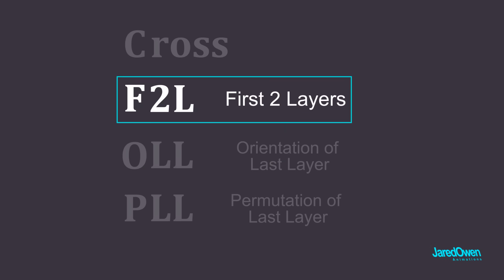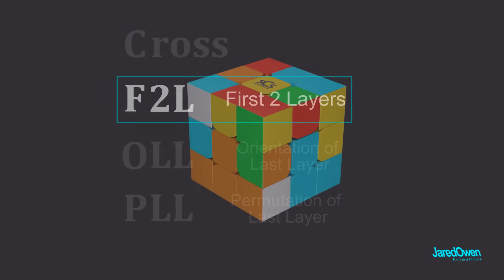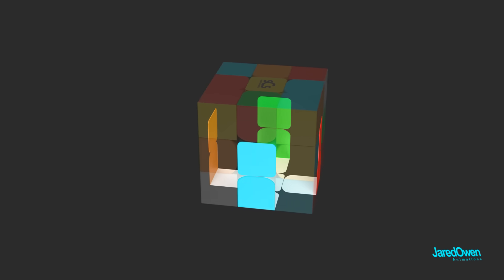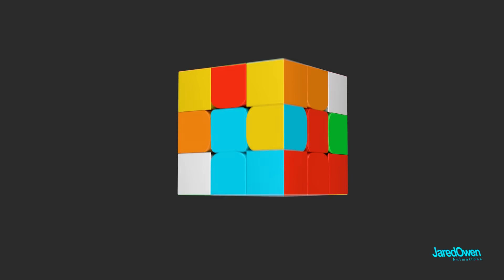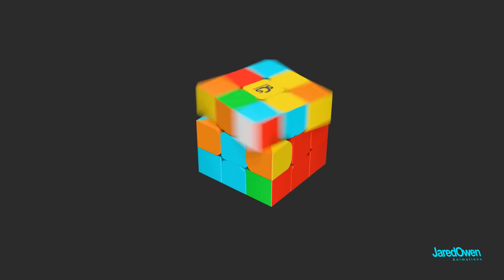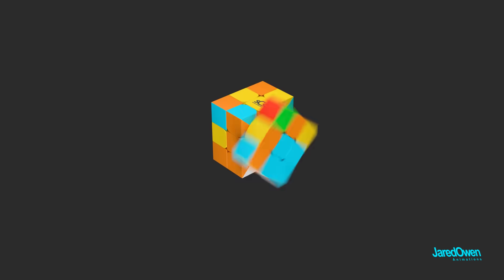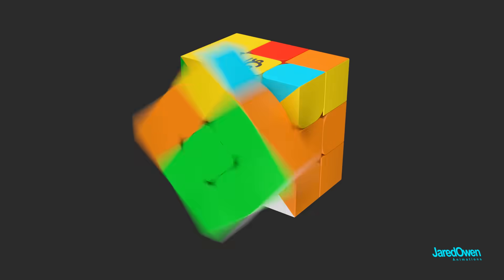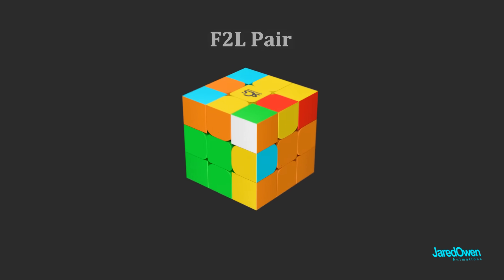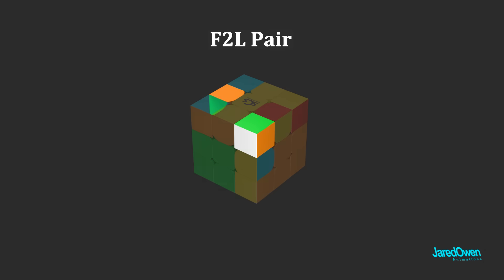Next is F2L, or first two layers. You'll notice we already have some of it solved. We just need to figure out these four pairs of pieces. Start with the corner pieces on the bottom layer. Then the edge pieces on the middle layer. Experienced speedcubers will solve these as an F2L pair, or first two layers pair, bringing them both down at the same time.